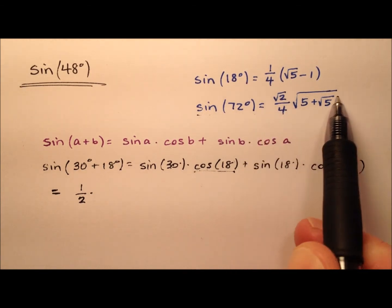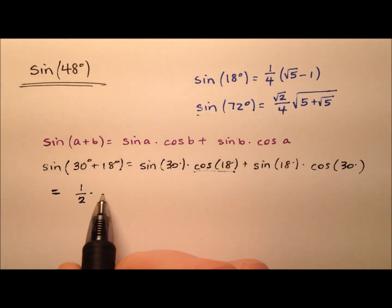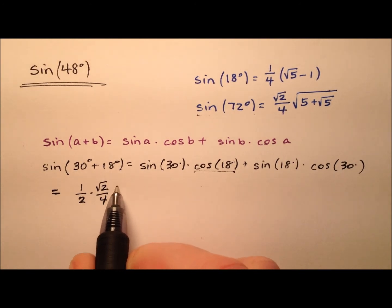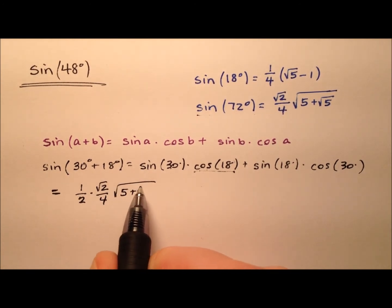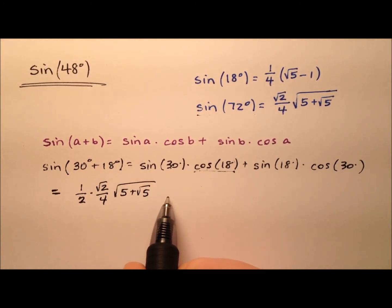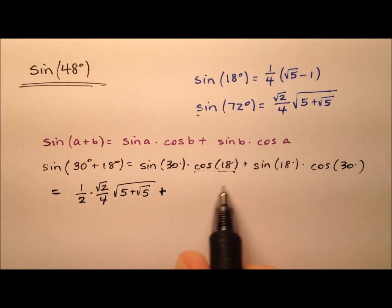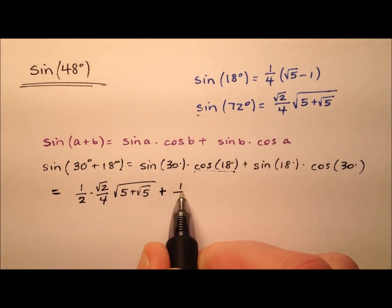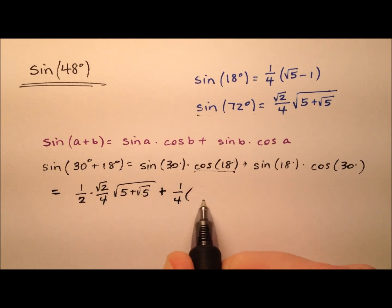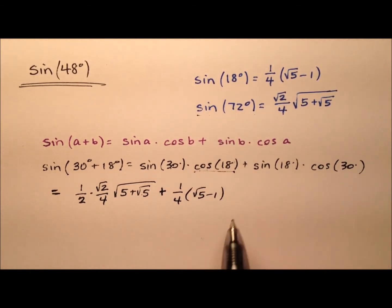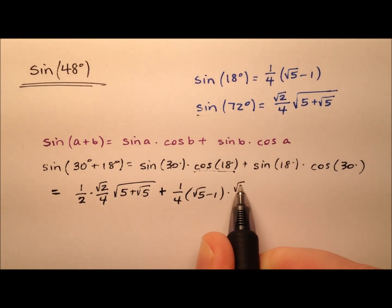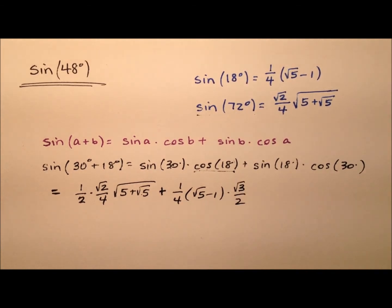So we'll go ahead and use the sine of 72 in place of cosine of 18. That gives us the square root of 2 over 4, multiplied by that radical expression. And to this, we add the sine of 18 degrees, which is 1/4 times the quantity (√5 − 1), and we multiply that by the cosine of 30 degrees, which is √3 over 2.